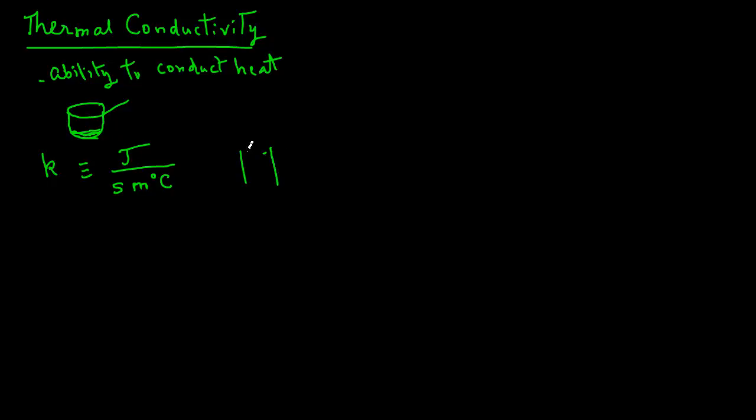These units tell us that if an object, for example a slab, is one meter thick and the temperature difference across its opposing faces is one degree Celsius, then the thermal conductivity is the number of joules that will conduct through this slab per second. So if the value of thermal conductivity of a material is 15, it means that 15 joules will be able to conduct in one second if the object is one meter thick and the temperature difference across the two faces is one degree Celsius.